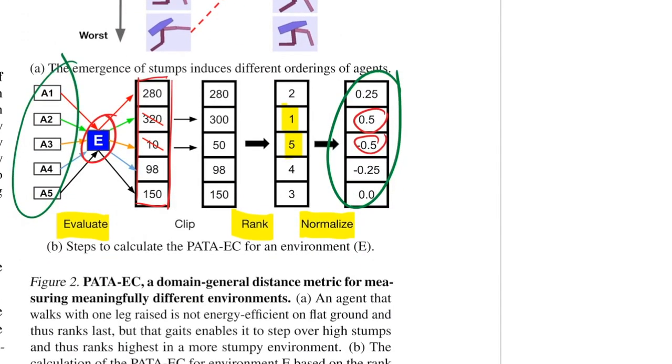And now this vector here is now used to compare environments. So if we have another environment, right here we have E2 and that gets a different ordering. So maybe agent 1 is now the best, agent 2 is really bad and so on. That gets a different ordering. Then the resulting vector here will be very different from this vector right here. And this is very agnostic.